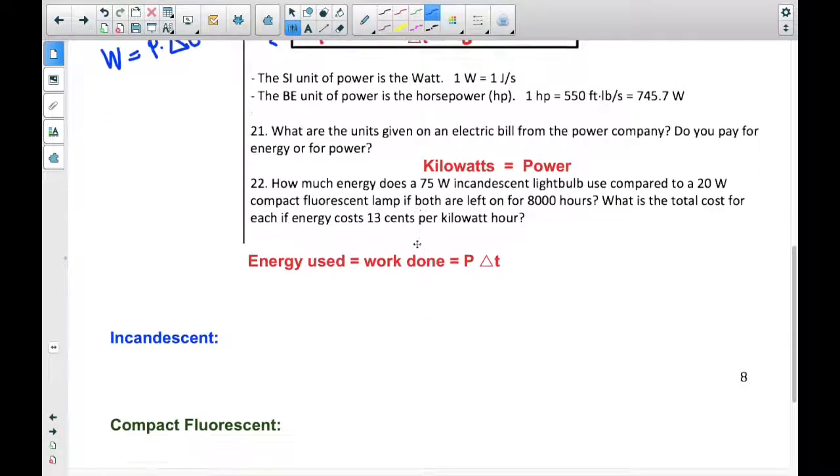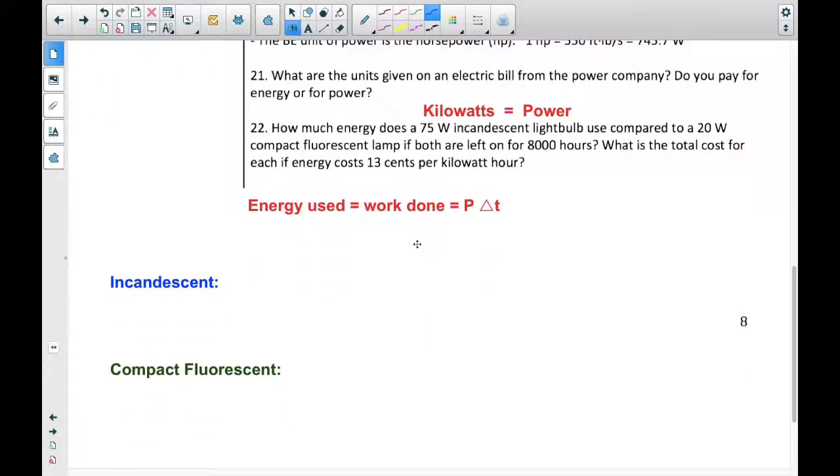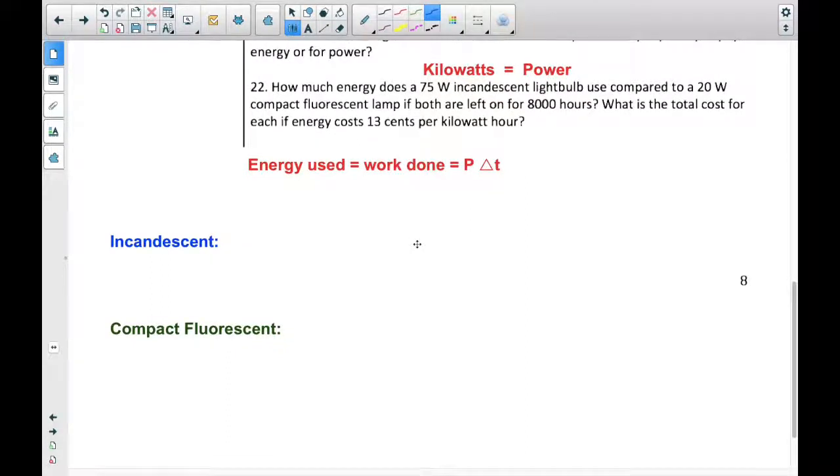So how much energy does a 75 watt incandescent light bulb use compared to a 20 watt CF lamp? For incandescent, the power we're talking about is in watts. It is 75 watts. The time is 8,000 hours. And if we multiply that out, we get 600,000 watt hours. Which typically what we do is we call them kilowatt hours. And so we would need to divide that by 1,000. And we would get 600 kilowatt hours.